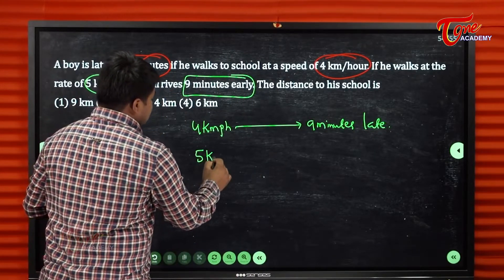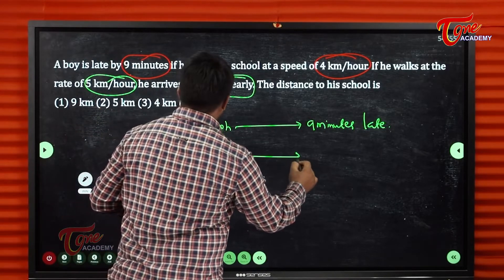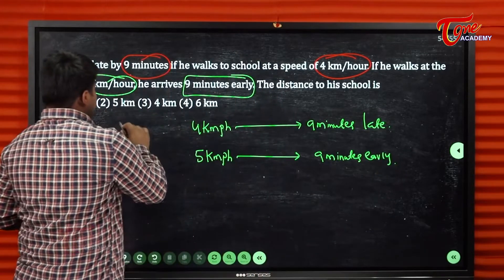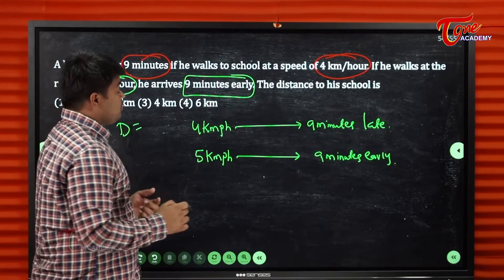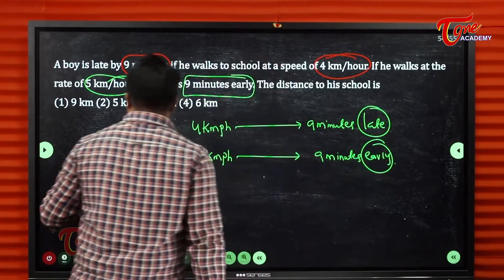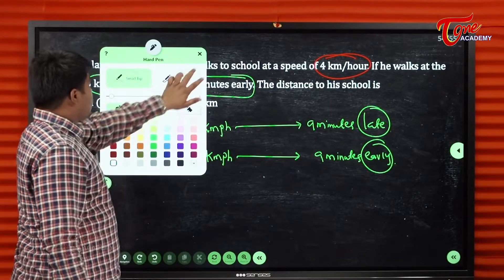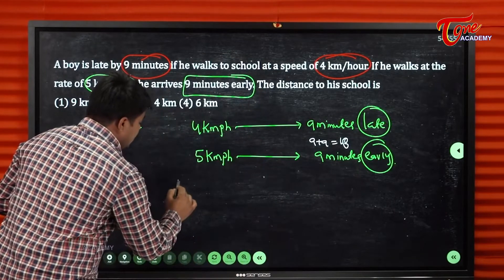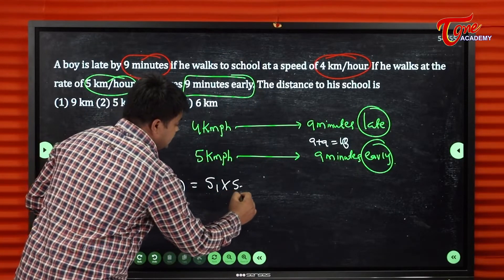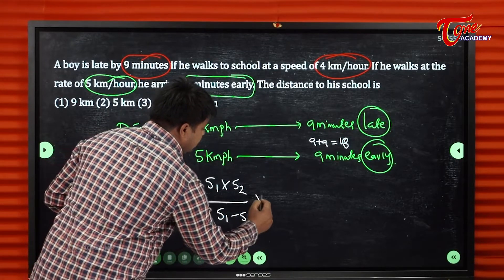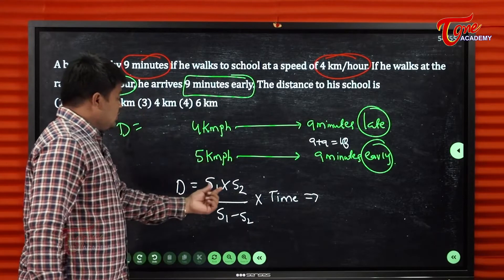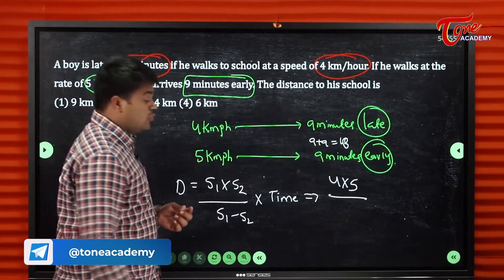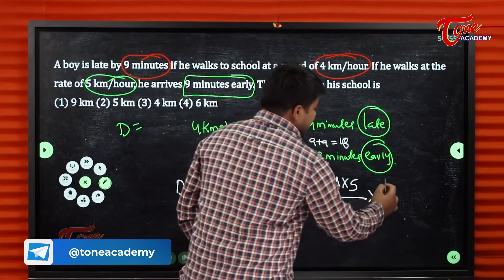Applying the formula: Distance = S1 × S2 / (S1 − S2) × time in hours. So: 4 × 5 / (5 − 4) × 18/60. The difference is 1. Simplifying: 4 × 5 × 18/60 = 20 × 3/10 = 6 kilometers. The distance is 6 kilometers.